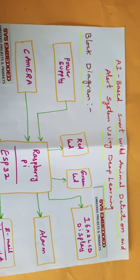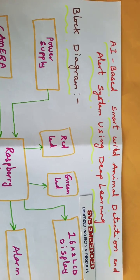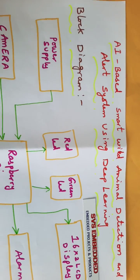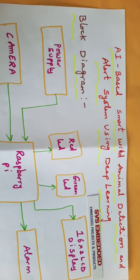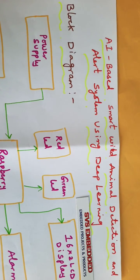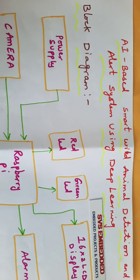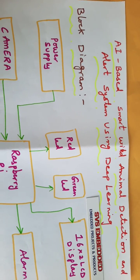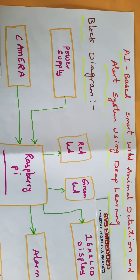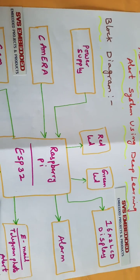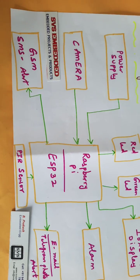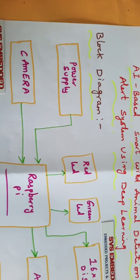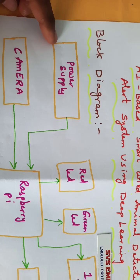AI based smart wild animal detection and alert system using deep learning. Here we are training the images into the database and checking which animal came. According to that, we are sending alert messages through Telegram photo alert as well as email alert. In this project we are using power supply board, 0 to 9 volts adapter, and 5 volts power supply board.